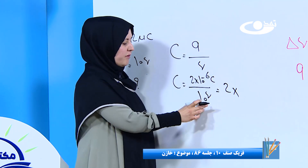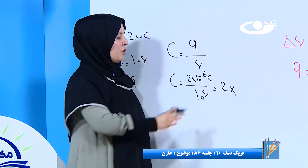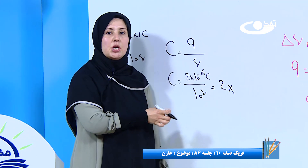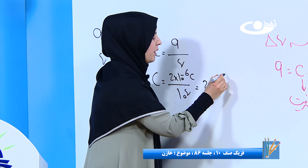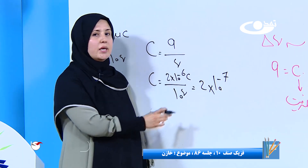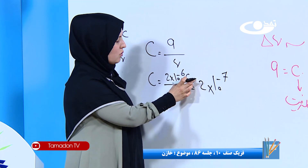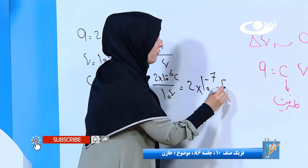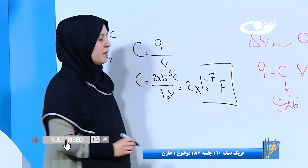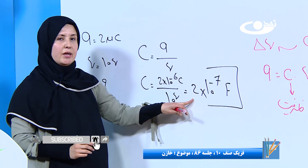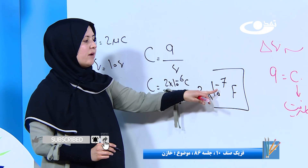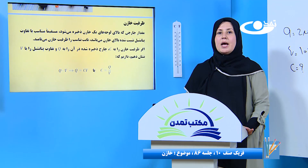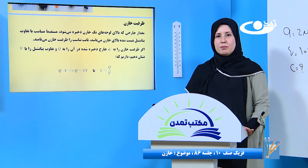C مساوی است با Q که داریم دو میکروکولمب؛ برای تبدیل به کولمب می‌شود ۲ × ۱۰⁻⁶ کولمب. مقدار V داریم ده ولت. پس: ۲ × ۱۰⁻⁶ تقسیم بر ۱۰ = ۲ × ۱۰⁻⁷ فاراد. واحد اندازه‌گیری کولمب بر ولت می‌شود فاراد. پس مقدار ظرفیت خازن را پیدا کردیم: ۲ × ۱۰⁻⁷ فاراد. این بود از درس امروز ما؛ تا جلسه بعدی همه شما عزیزان را به خدای بزرگ می‌سپارم.